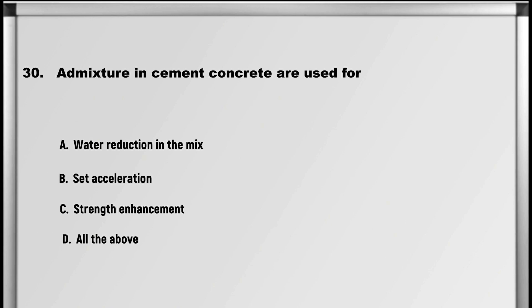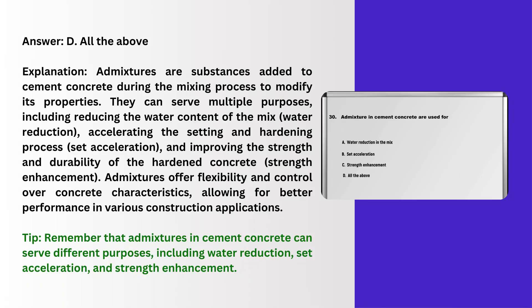Next up is question number 30: Admixtures in cement concrete are used for: A. Water reduction in the mix, B. Set acceleration, C. Strength enhancement, D. All the above. Answer: D. All the above.